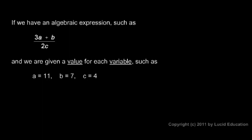But in this case we're given a value for each variable. In this case we're told that a is equal to 11. So that a right there really represents the number 11. And b is equal to 7. So that b represents the number 7. And c is equal to 4. So instead of 2 times c right there you can think 2 times 4.